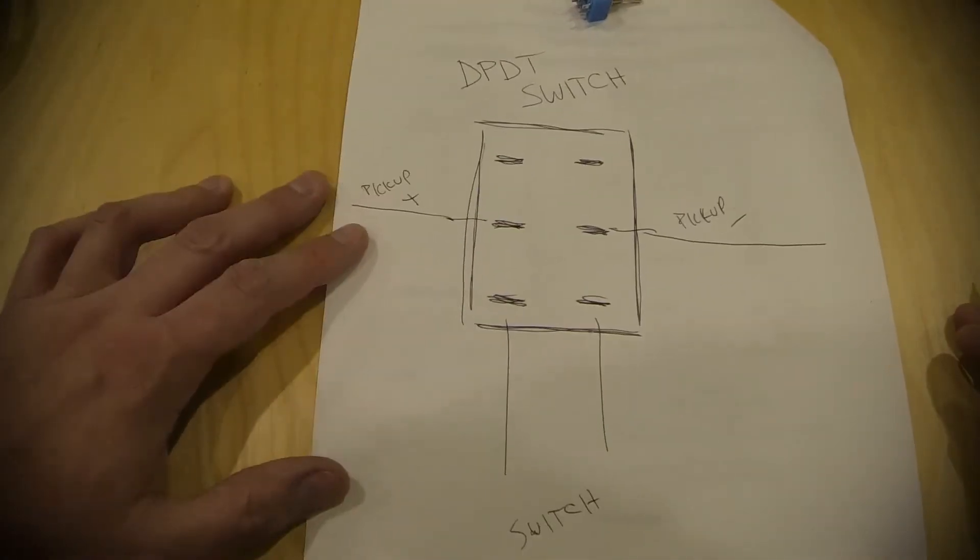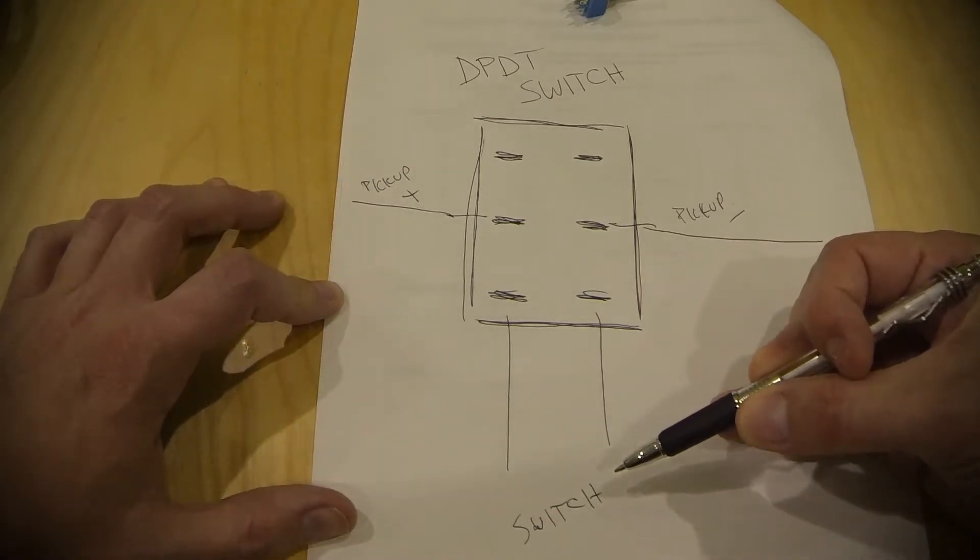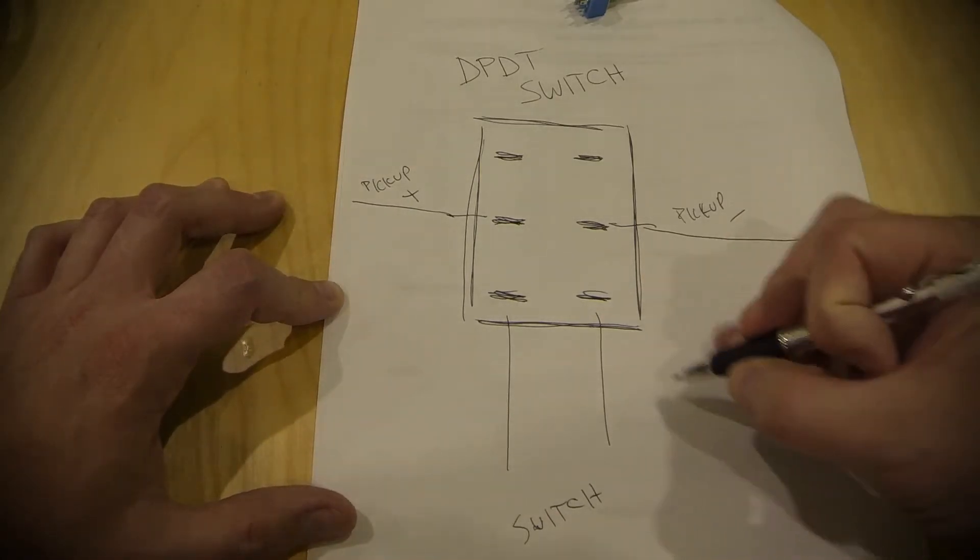So, it's kind of hard to see. Yeah, so this is actually going to go out to your switching mechanism for your guitar, or it can go directly to your volume pot either way. Anyway, this is your output.